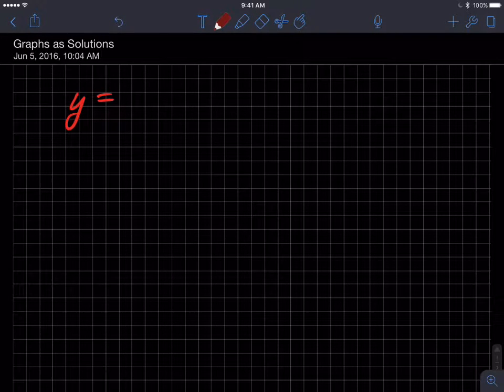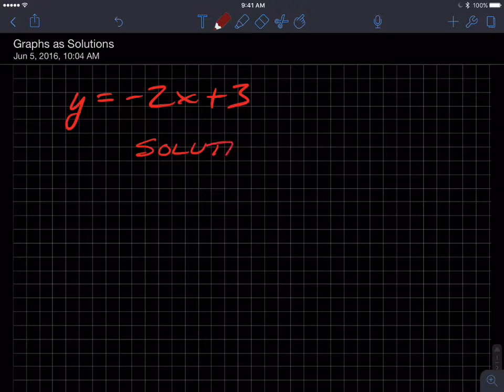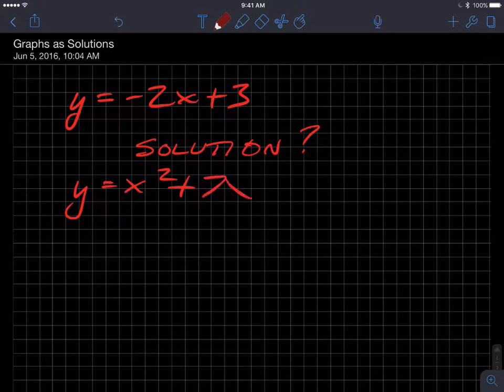So let's consider this equation negative 2x plus 3, y equals negative 2x plus 3, and let's think about if we were to solve this, what is its solution? Think of, you know, if we were in class I'd be asking those questions. How about this guy, y equals x squared plus 7x minus 2? What would its solution look like?